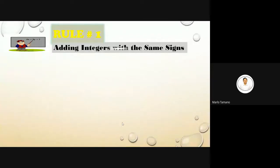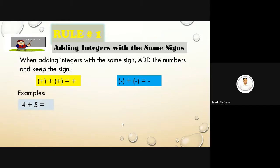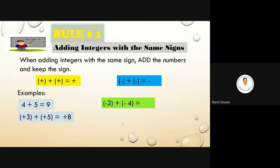Rule number one: adding integers with the same sign. When adding integers with the same sign, add the numbers and keep the sign. If both are positive, the answer is positive. If both are negative, the answer is negative. For example: 4 plus 5 is 9; positive 3 plus positive 5 is positive 8; negative 2 plus negative 4 is negative 6; negative 5 plus negative 12 is negative 17.